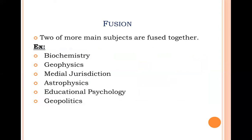Fusion is like nuclear fusion — you combine or merge two or three subjects together to form a new subject. Examples include biochemistry, geophysics, astrophysics, educational psychology, and geopolitics. The distinctive feature of fusion is that when two subjects are fused together, each loses its individuality — both subjects lose their uniqueness and their features merge to form an entirely new subject.